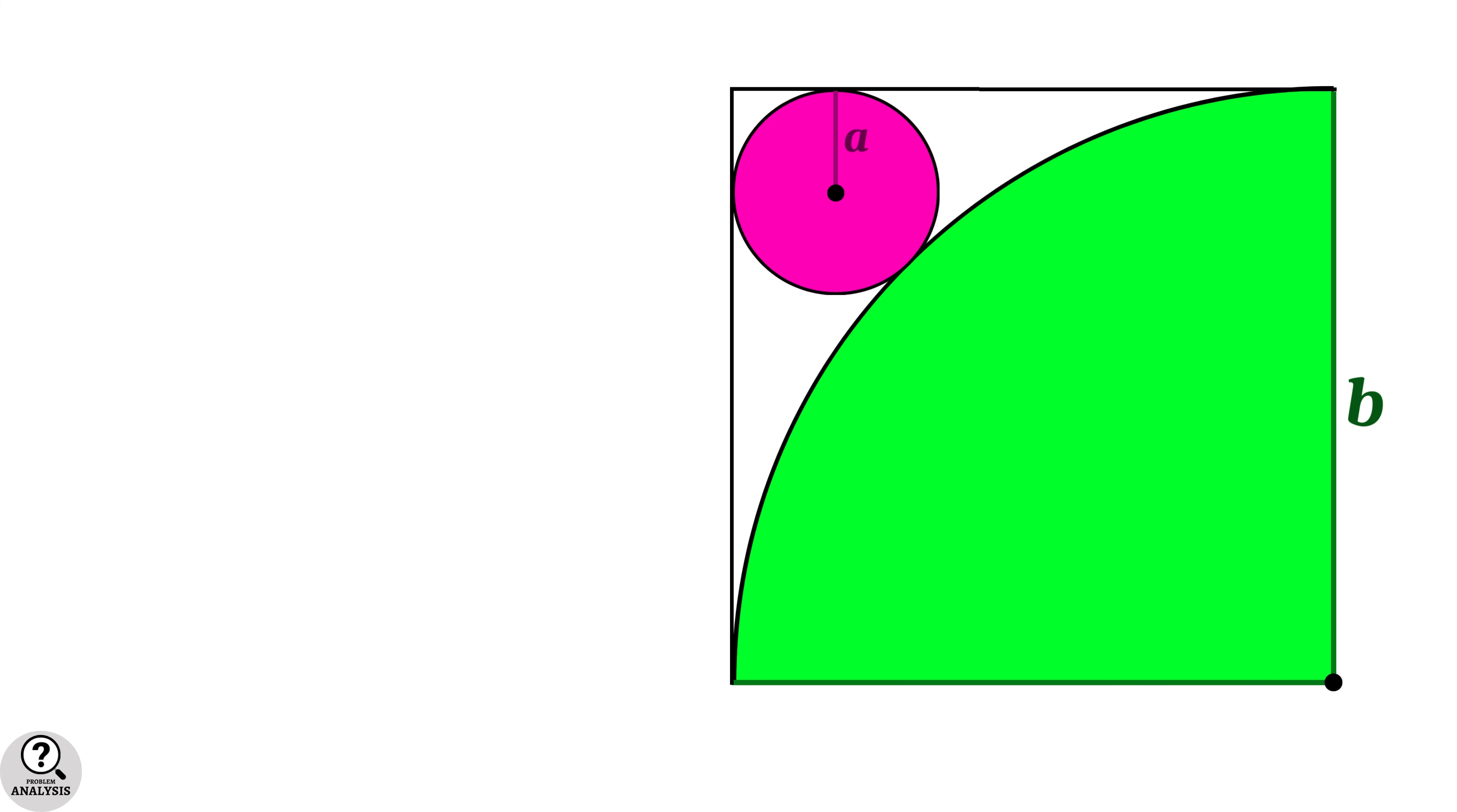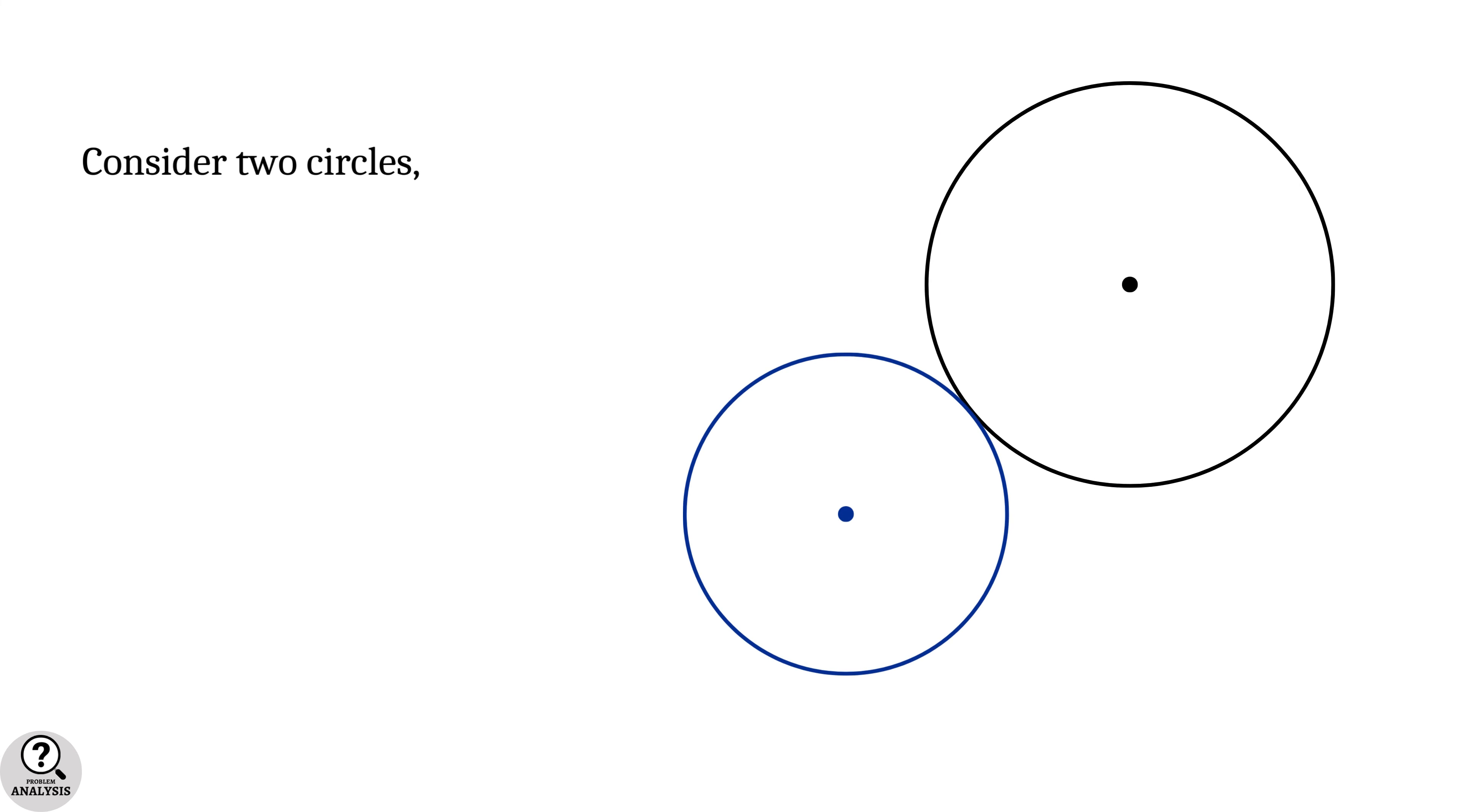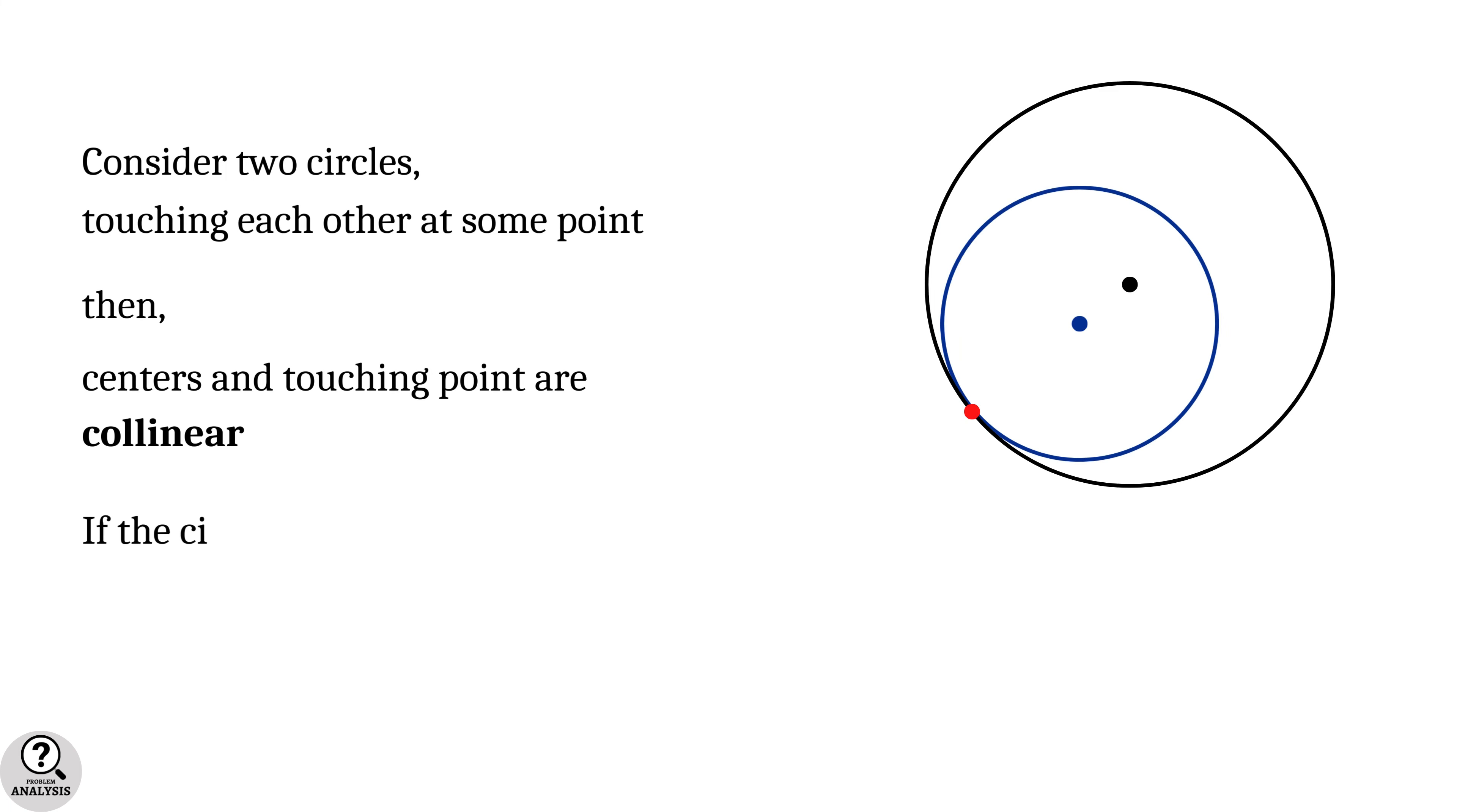Now the two circles we have are tangent circles, that is touching each other. So we need to note a very important property of touching circles. For that, consider two circles touching at some point externally. Then the fact is: centers of the circles and their touching point are collinear. If the circles are touching internally, that is one circle is inside the other, still the result is true.